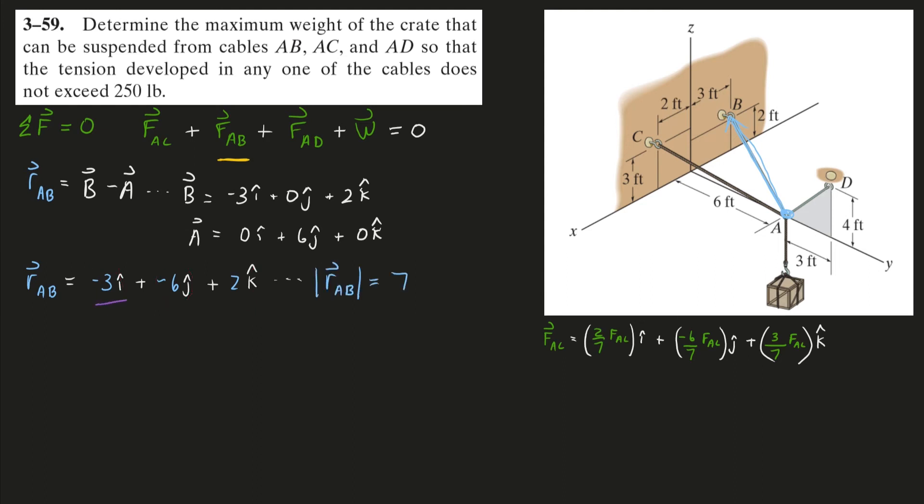I'll take that 7 and divide it into each component, as well as the magnitude of this position vector. The result will be that unit vector in the same direction. Now I can take the actual force that is in that rope and multiply it into that unit vector. That will extend that unit vector into the length of the force vector in the AB direction.